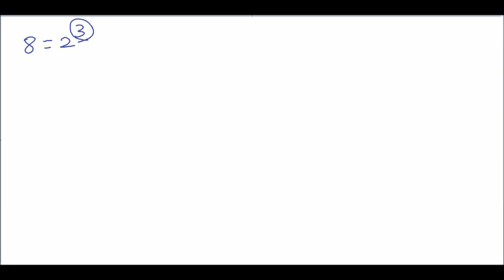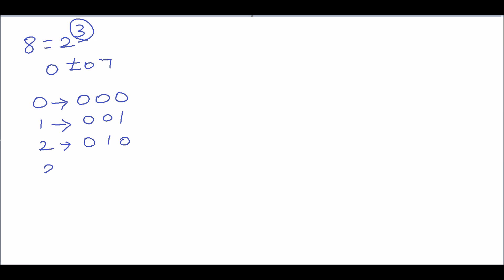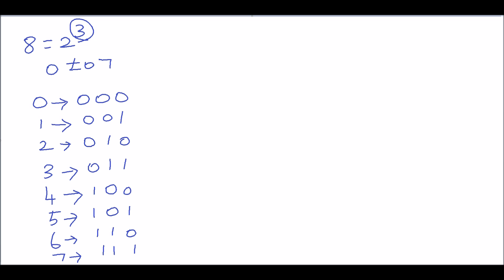This indicates that with the help of three bits we can represent the octal numbers from 0 to 7. So: 0 is written as 000, 1 as 001, 2 as 010, 3 as 011, 4 as 100, 5 as 101, 6 as 110, and 7 as 111. The maximum octal digit, 7, is represented by three bits: 1 1 1.